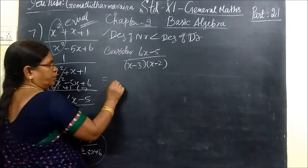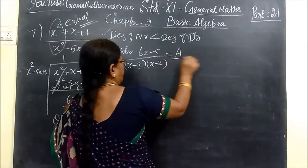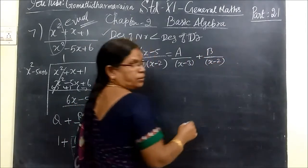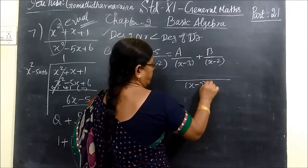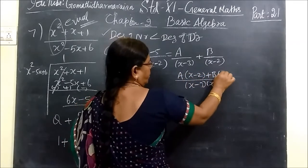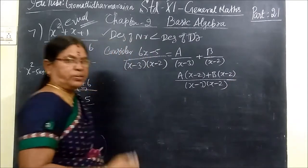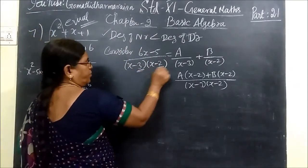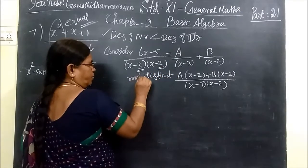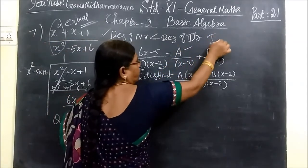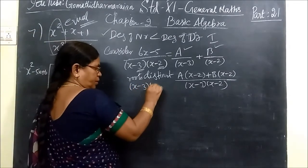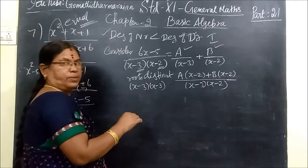So how you write is A by first factor plus B by second factor. So now you take the LCM for this: x minus 3, x minus 2. So cross multiply. When you write in this form, you can cross multiply. These two are distinct, different. So this one is distinct roots. This is the first type: A by x minus 3 plus B by x minus 2.